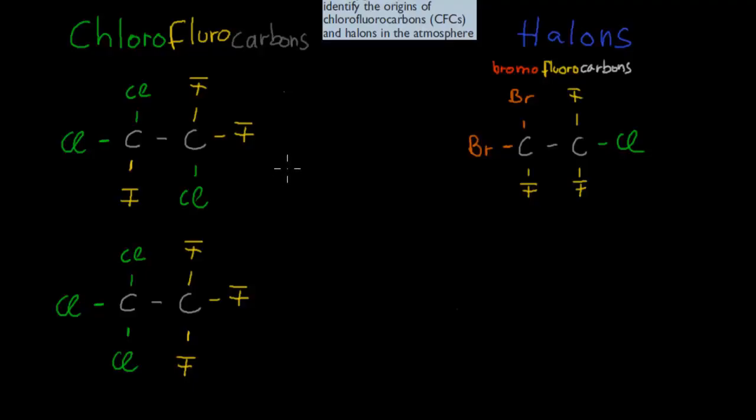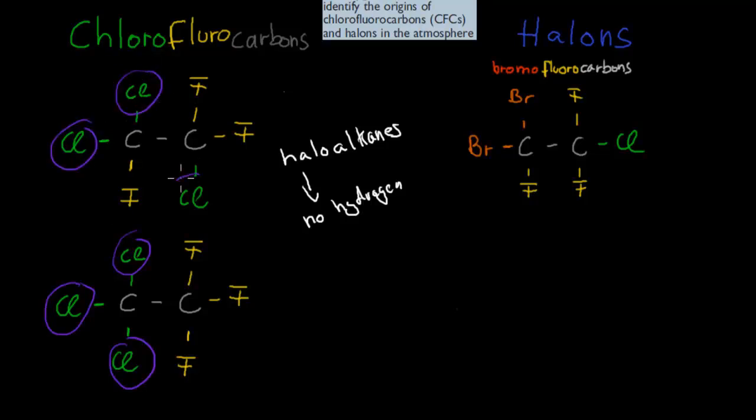I want to start this video with going over the two terms we mentioned in the last video: chlorofluorocarbons and halons. Chlorofluorocarbons were examples of halo-alkanes and they had no hydrogens in their structure. They had plenty of these chlorines and fluorines. So here we have two isomers. They have the same chemical structure, so both have three chlorines and three fluorines, but their actual positioning is different. Here we have three here, whereas here they're in a different position. That's what an isomer is.